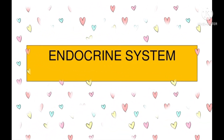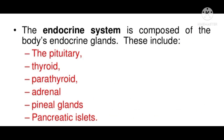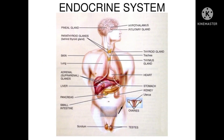Hello friends, this is Shivalika and I'm here to tell you about the endocrine system. According to our syllabus of Class 10th ICSE, we have four glands to study: the adrenal gland, the pancreas gland, the pituitary gland, and the thyroid gland. We are going to study these four glands in detail, including the diseases which occur due to the hypersecretion or hyposecretion of the hormones secreted by these four glands.